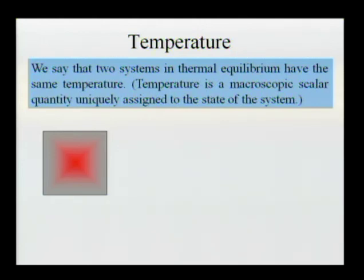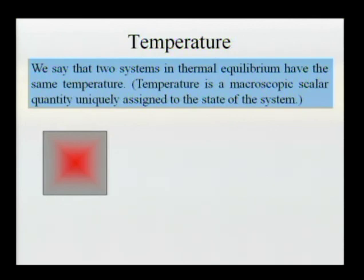The Celsius scale is based on the temperature of freezing water and boiling water, and in between it is made artificially. The Kelvin scale is very similar — at least a one-degree change in Celsius scale is the same as a one-degree change in Kelvin scale.